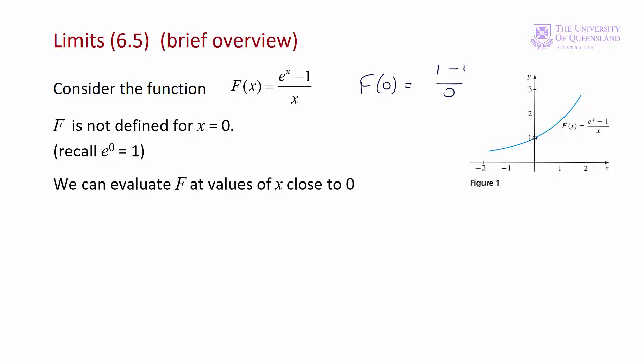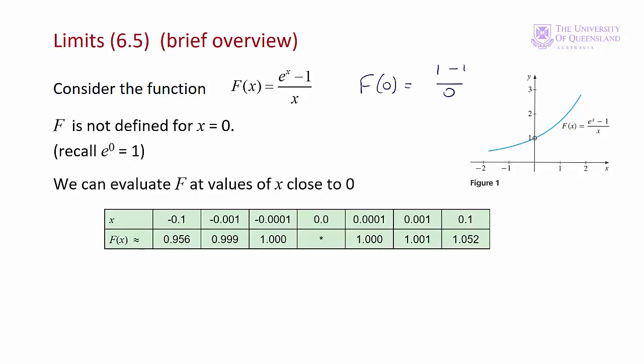What about numbers close to 0 though? We can evaluate the function as we approach 0 from below — the negative side — or from above — the positive side. Here we have x = 0 where the function is undefined. If we look at the approximate values of f(x) as we get closer and closer to 0 from above — 0.1, 0.001, 0.0001 — we get f(x) values shown to three decimal places, but if we increase the precision we would see these values never actually equal 1. They get very very close but never get there.